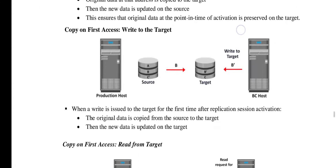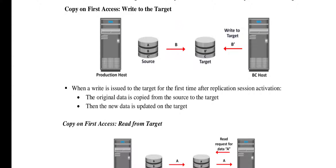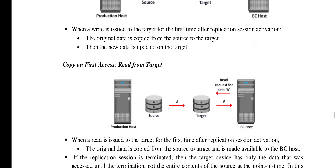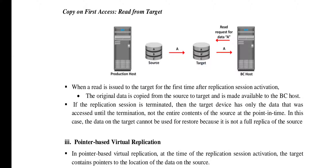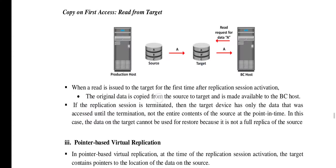Next is write to target, which is a command given by the BC host. When a write is issued to the target for the first time, the original data is copied from the source to the target — so B is copied first, then the new data updates B to B-dash. For read from target: A, B, C are already there in the target. When a read is issued to the target for the first time, the original data is copied from the source to the target and made available to the BC host.